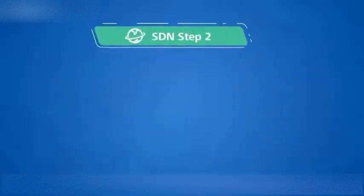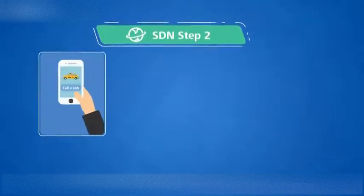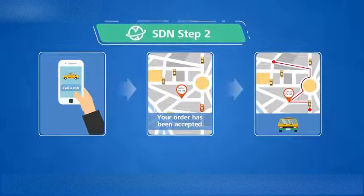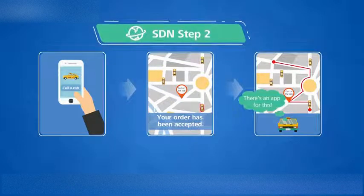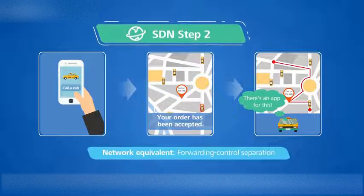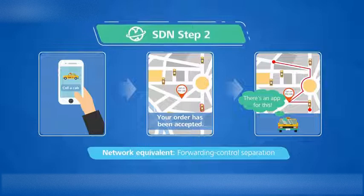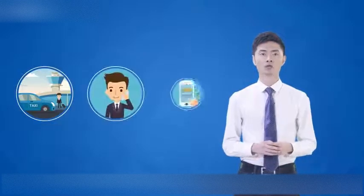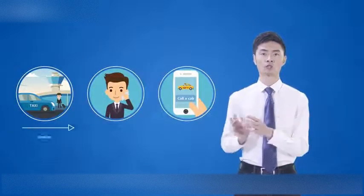Now consider using an app to call a cab. The app not only centralizes dispatch, but also computes a route for the driver based on current traffic. All the driver needs to do is follow the planned route. This is the second step towards SDN. Control and forwarding are separated.